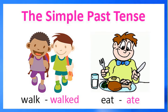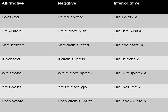Simple past tense. At the simple past, the conjugation of verbs is not the same because there are regular verbs and irregular verbs. For regular verbs, we just add -ed at the end. For example: work, visit, start, pass — they are regular verbs. But for irregular verbs like speak, go, write — speak becomes spoke, go becomes went, write becomes wrote.